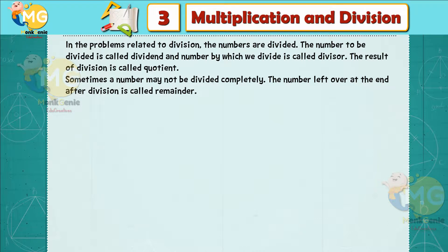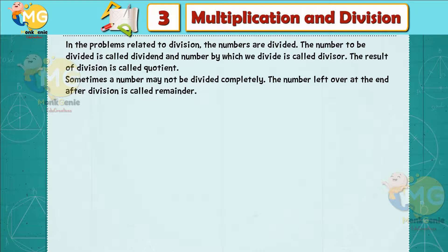Division: in problems related to division, the number to be divided is called the dividend and the number by which we divide is called the divisor. The result of division is called the quotient. Sometimes a number may not be divided completely.